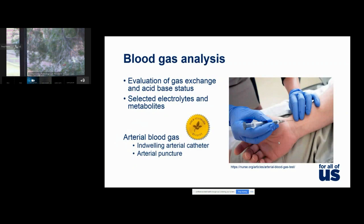In terms of the general utility of blood gas analysis, we're mainly looking at the evaluation of gas exchange and acid-base status. With the development of newer technology, blood gas machines have added selected electrolytes and metabolites including glucose, lactate, and creatinine. For evaluating gas exchange and acid-base status, the arterial blood gas sample is the gold standard.